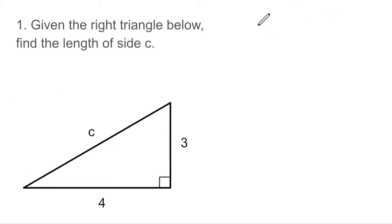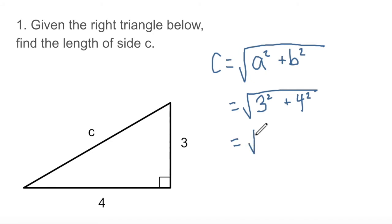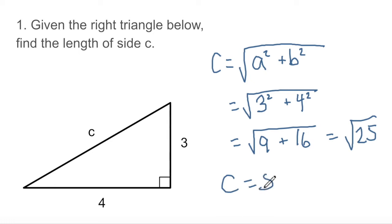Let's solve a problem using the Pythagorean Theorem. We don't know what c is, but we're given the two side lengths of 3 and 4, and we're asked to find the length of side c. We can see this is a right triangle because of the mark in the corner. So c equals the square root of a squared plus b squared, which equals the square root of 3 squared plus 4 squared, which equals the square root of 9 plus 16, which is the square root of 25. When we take the square root of 25, c is equal to 5. Side c is equal to 5.